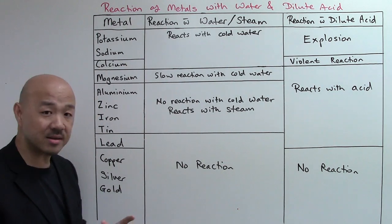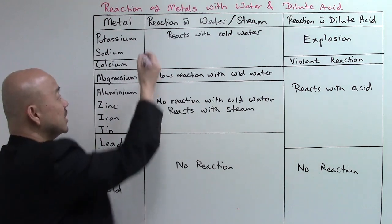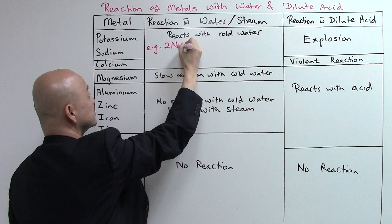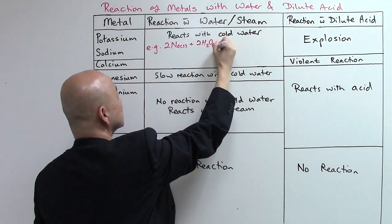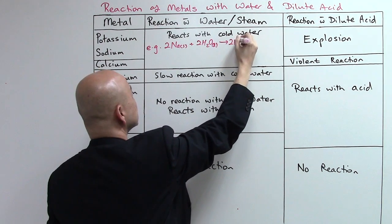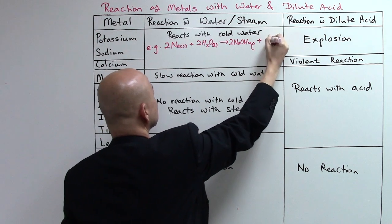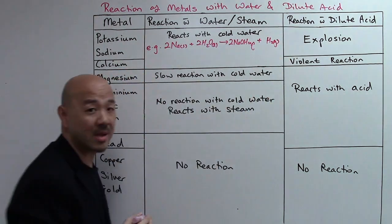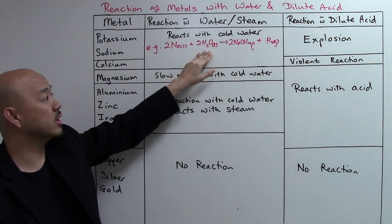When they react they will form alkaline solution and hydrogen gas. Let me give you the equation: 2Na + 2H2O → 2NaOH + H2.